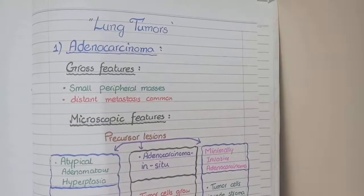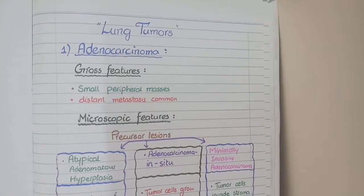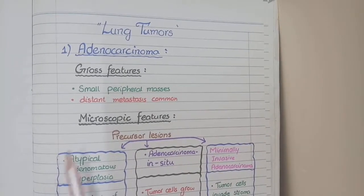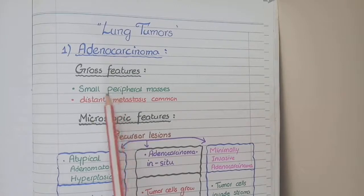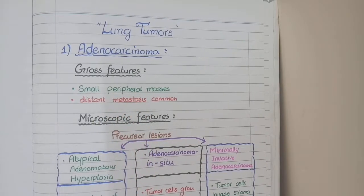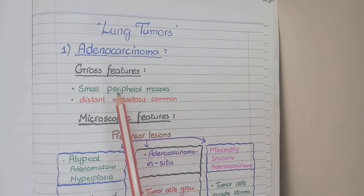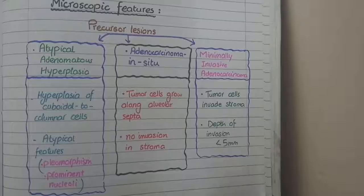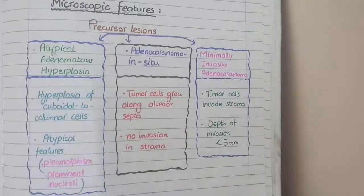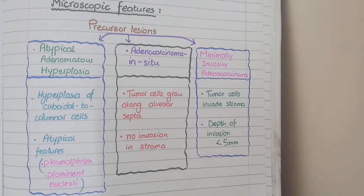We will first discuss the pathology of adenocarcinoma. On gross specimen, the unique feature is that the tumor is present in the peripheral areas of the lungs. Adenocarcinoma is more likely than other tumors to metastasize into different organs. The basic feature to remember is that adenocarcinoma is usually present in the form of peripheral masses.